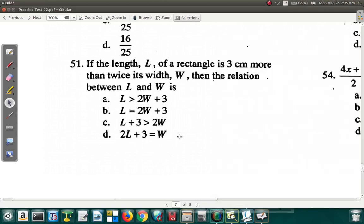Question 51, Practice test 2. If the length L of a rectangle is 3 centimeters more than twice its width W, then the relation between L and W is.